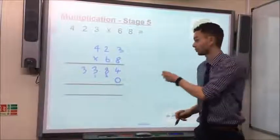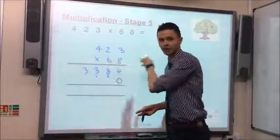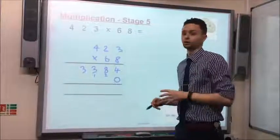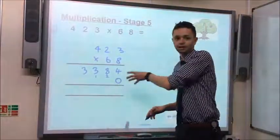The reason is because we are multiplying by the tens. And it's very important that children understand why we put this placeholder here, and not just that they have to put the 0 there because they've been told to.